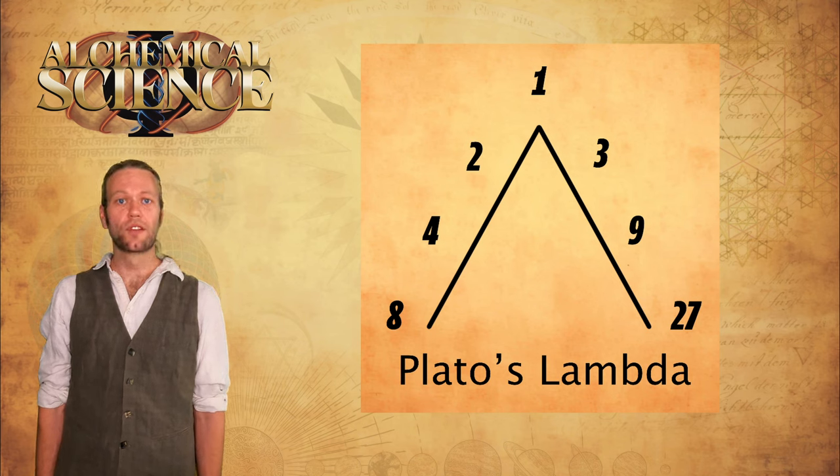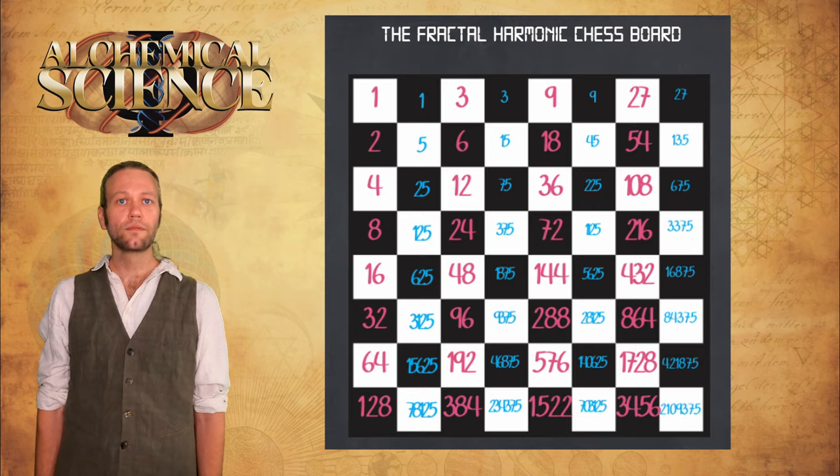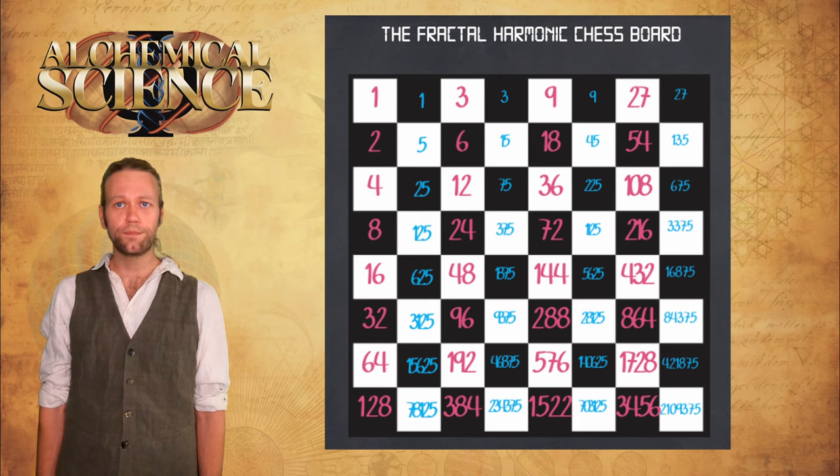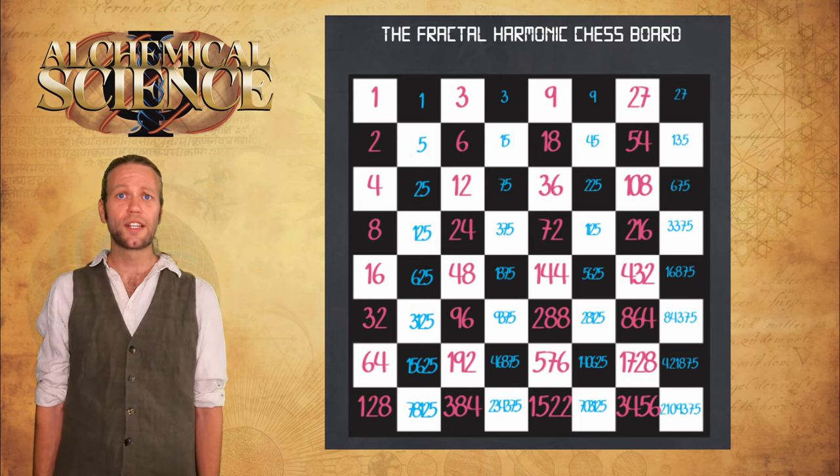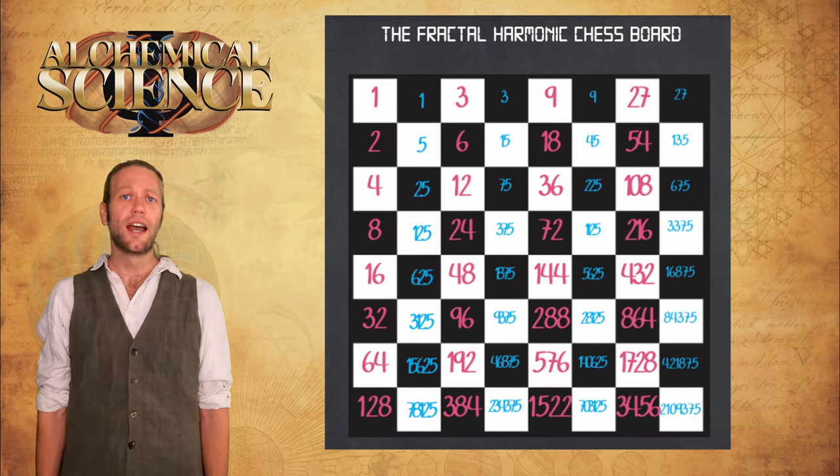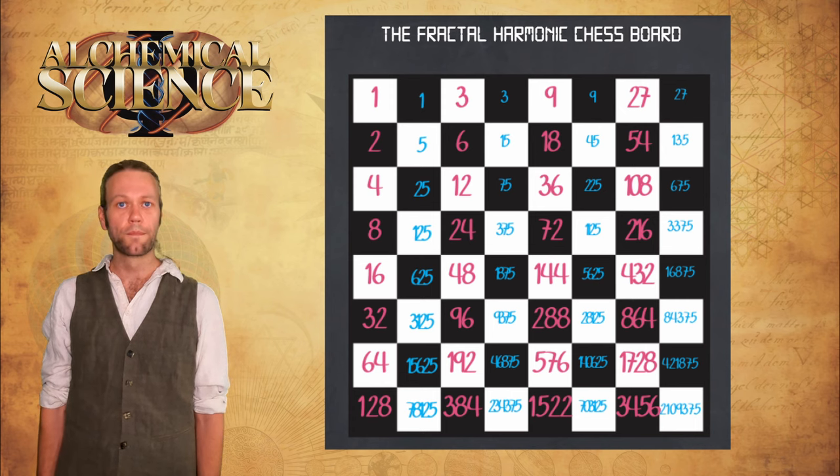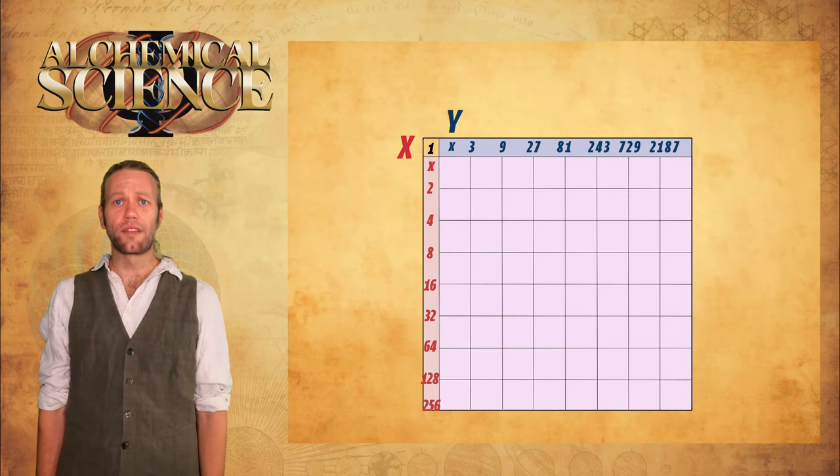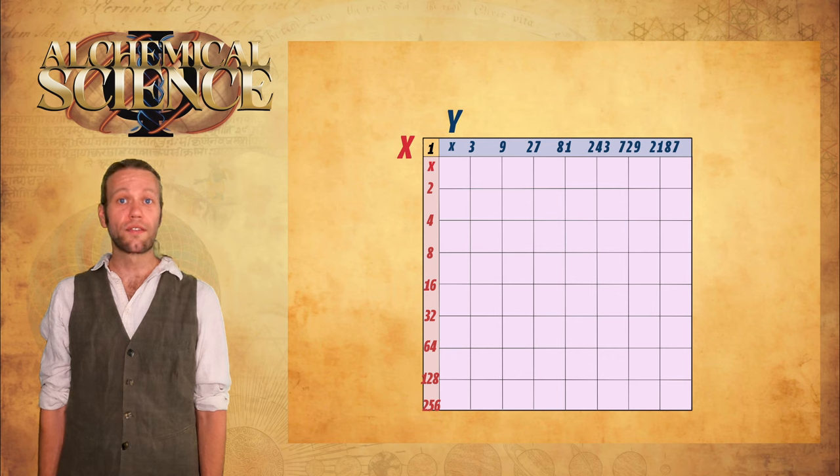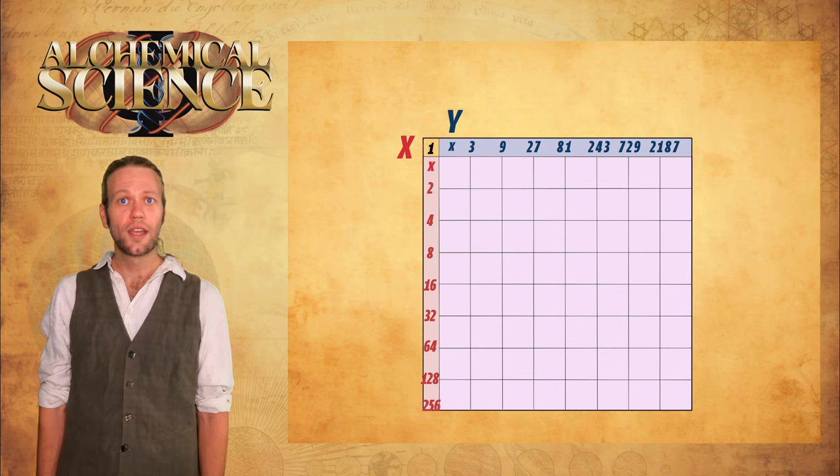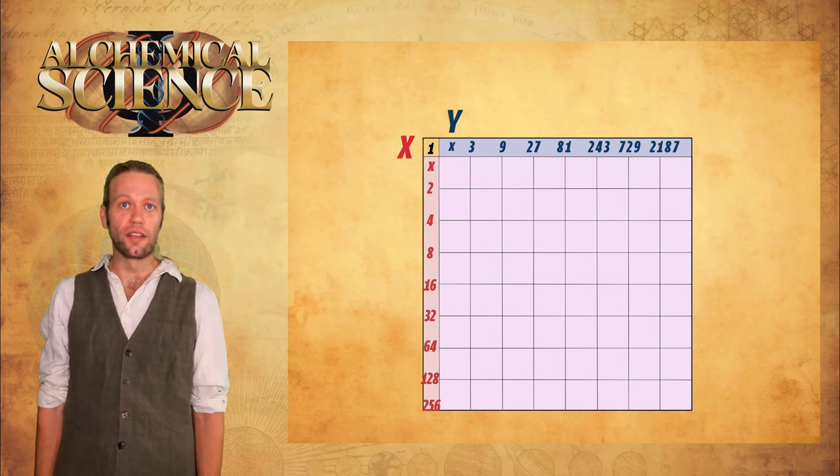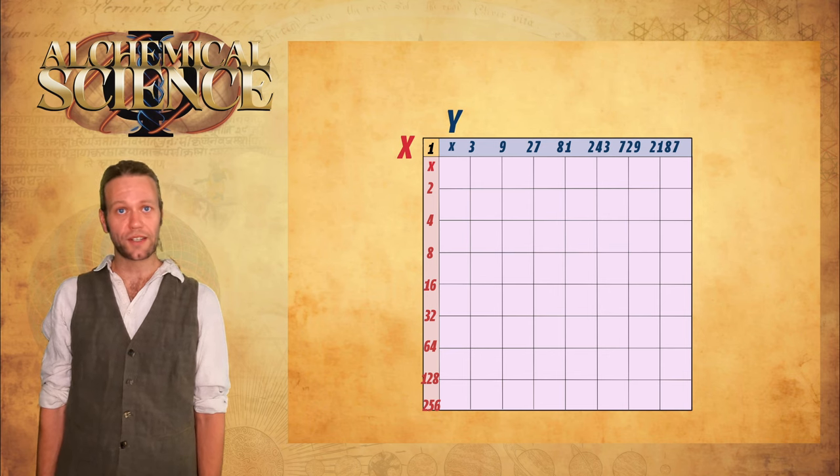Applying the lambda sequence to the template. This begins in a similar way to my harmonic chessboard concept. In my idea, I place the numbers within the squares and then use the square divisions to place the doubling sequence vertically and the tripling sequence horizontally. Ed does exactly the same thing here, starting by placing the one in the top left corner, the origin, and then doubling on the vertical axis, the y, and tripling on the horizontal axis, the x.